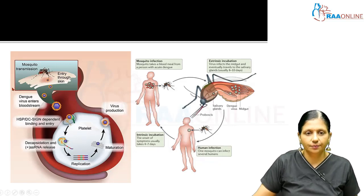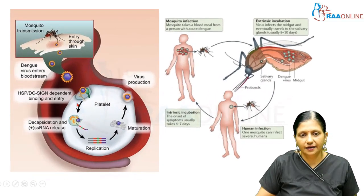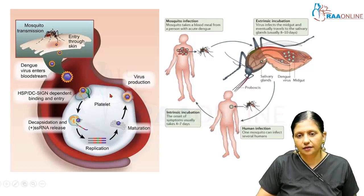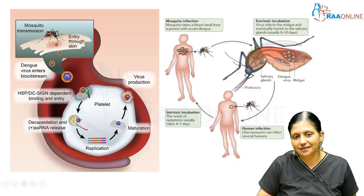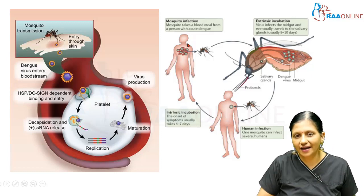The Dengue virus enters through the skin into the bloodstream, where it undergoes replication after decapsidation and single-stranded RNA release inside the cell. Once mature viral particles are synthesized, the viruses are released into the blood, initiating the phase of viremia.